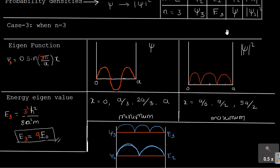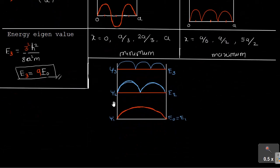For case n=3, the probability density has minimum values (zero) at x = 0, a/3, 2a/3, and a, and maximum values at x = a/6, a/2, and 5a/6. The ψ wave and |ψ|² wave shapes look accordingly. Drawing all three together — E₁, E₂, E₃ with their ψ₁, ψ₂, ψ₃ waves — in the ground state there is one possibility, in the first excited state two, and in the second excited state three possibilities of finding the particle.